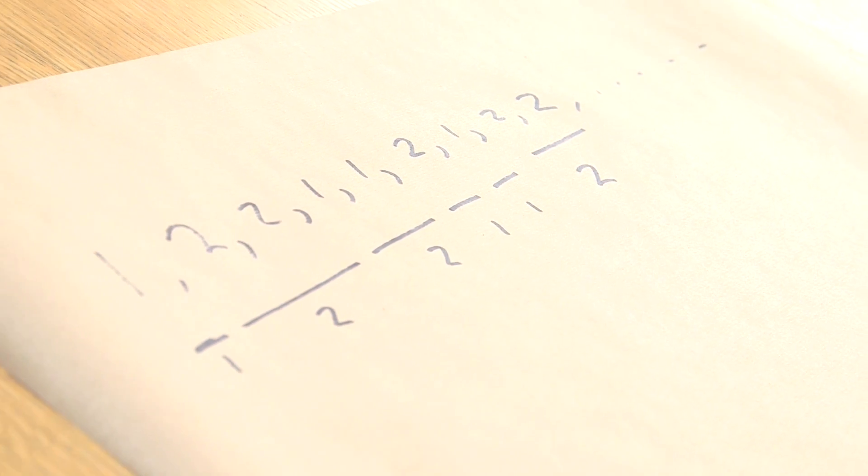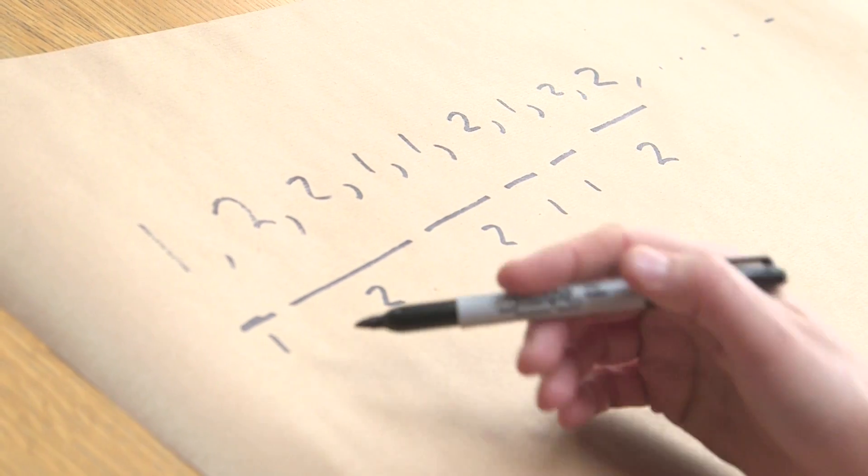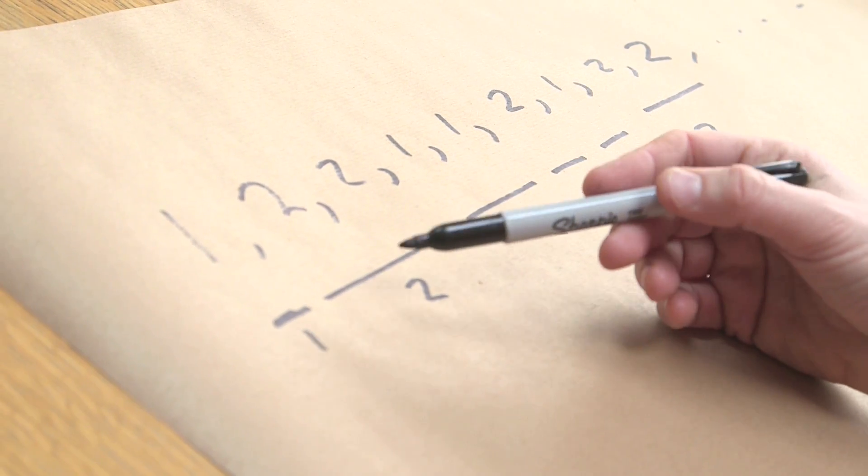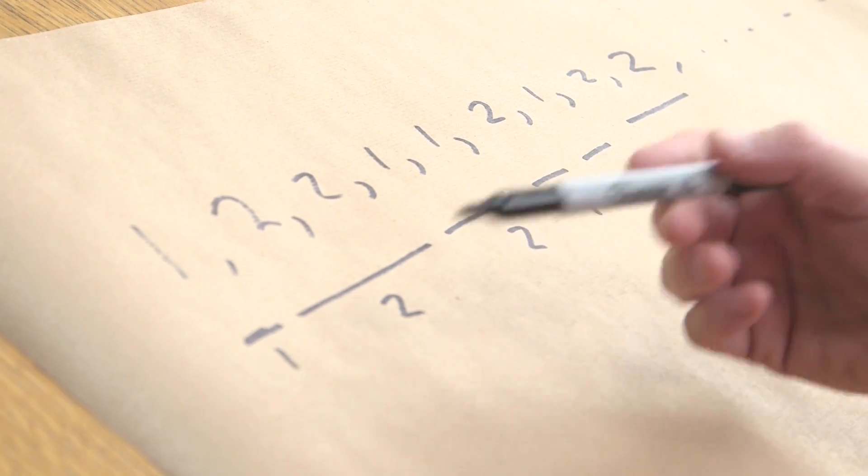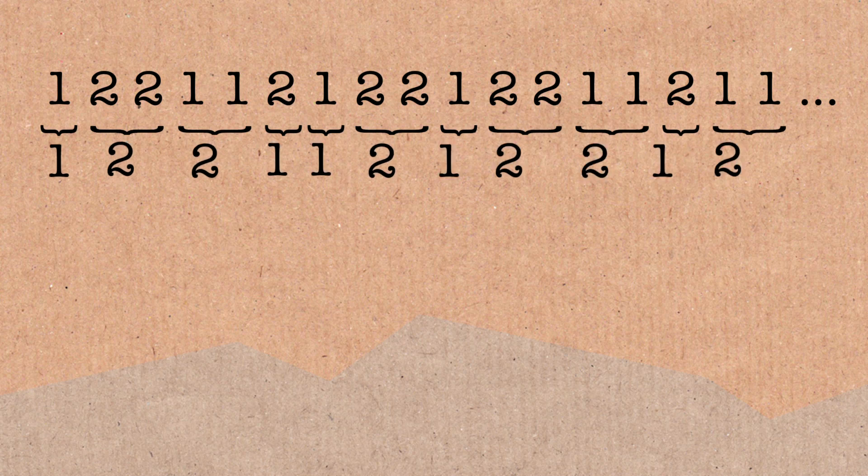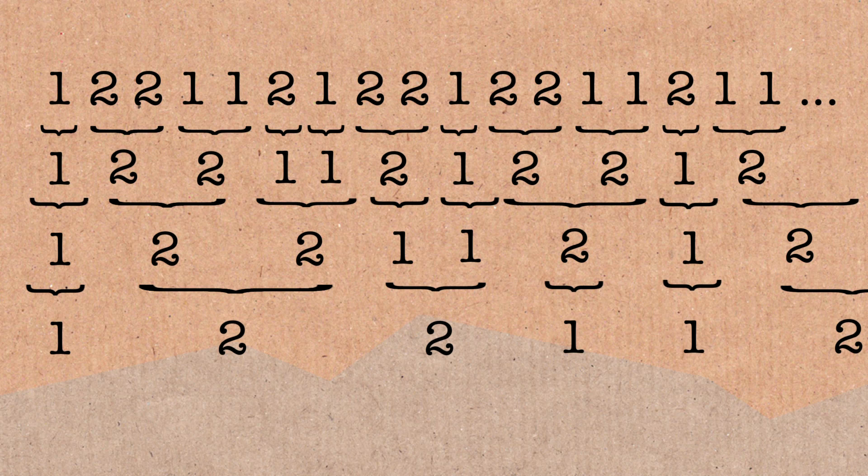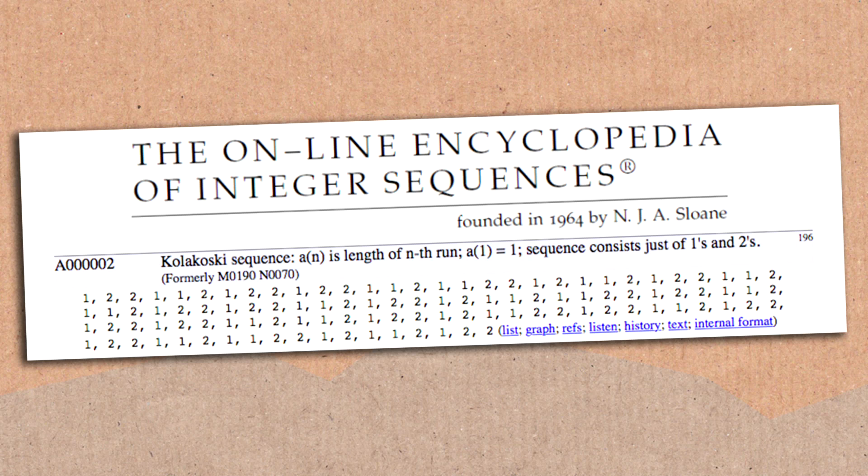And this will continue forever. In other words, the sequence describes itself by telling you the length of the run. It's a very, very famous sequence. It's one of the very first ones that was put in the online encyclopedia of integer sequences. So people just say it's the Kolakovsky sequence.